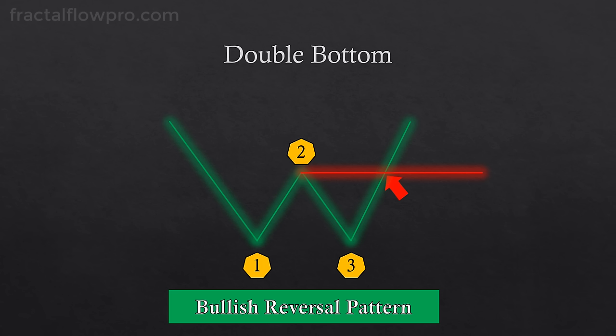Now we'll move on to the continuation chart patterns, starting with probably the simplest one, which is called rectangle. A rectangle happens when price begins to oscillate sideways and the resulting highs and lows form horizontal lines, making the pattern resemble the shape of a rectangle. The logic behind the rectangle as a continuation pattern is that price has been trending for a while, and now there is some consolidation since the market cannot keep rising or falling forever. Price is always oscillating between these two modes: it's either trending or going sideways.